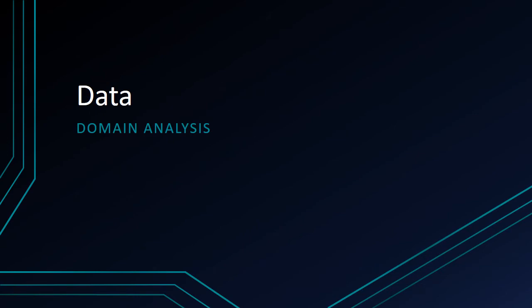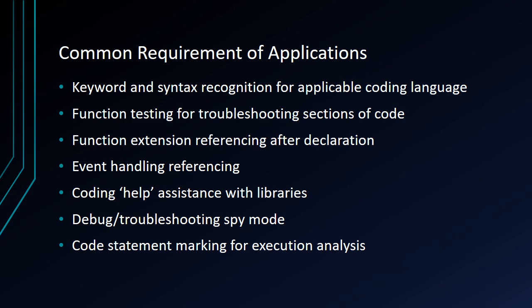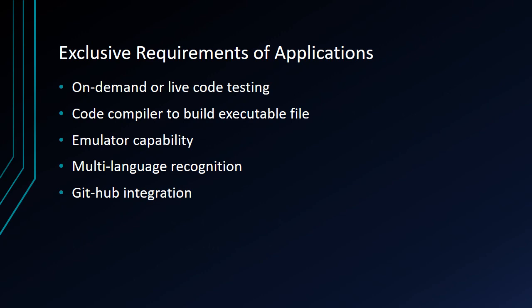Now we will present some data regarding a domain analysis. For this study, we will review and analyze programming environments such as Notepad++, Visual Basic for Applications, and Android Software Development Kit. Some common requirements for these applications were keyword and syntax recognition for applicable coding language, function testing for troubleshooting sections of code, function extensions referencing after declarations, event handling and referencing, coding help assistance with libraries, debugging or troubleshooting spy modes, and code statements that can be marked for execution analysis. Some exclusive requirements were on-demand or live code testing, a code compiler to build executable files, emulator capability, multi-language recognition, and both the Android development app and Notepad++ were able to have GitHub integration.